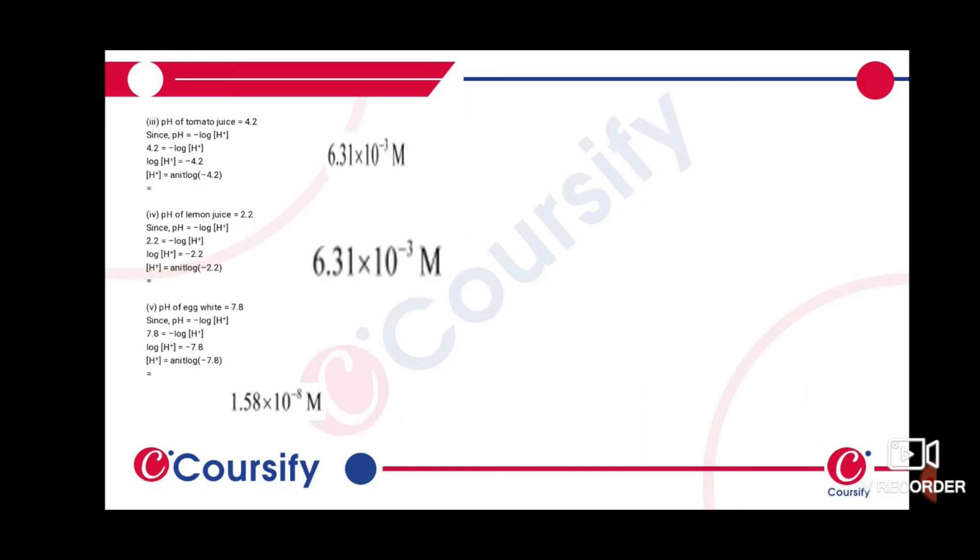The pH of tomato juice is 4.2. The hydrogen ion concentration is antilog of -4.2, which gives 6.31 × 10^-3 M.